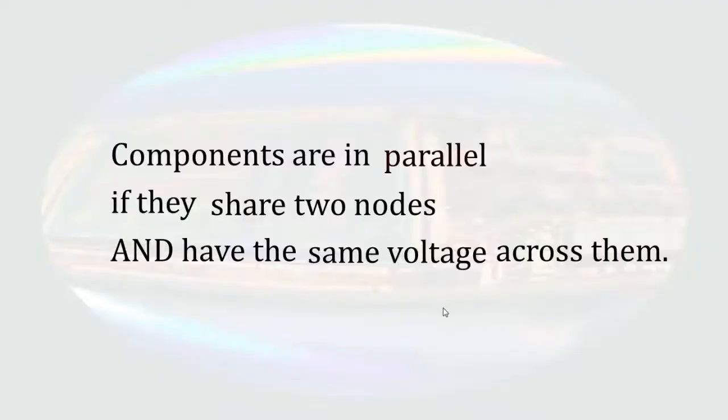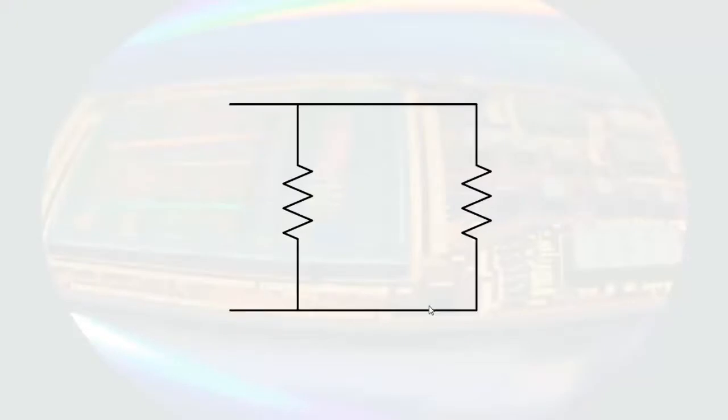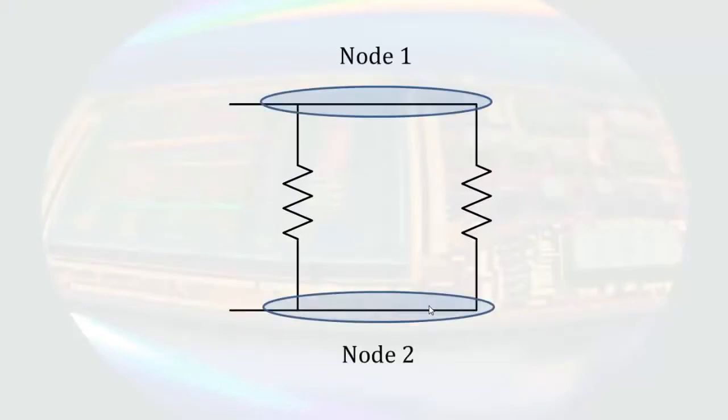Let's move on to parallel connections. Components are in parallel if they share two nodes and have the same voltage across them. This is a little redundant because a voltage is a difference in potential between two nodes — so if components share two nodes, they necessarily have the same voltage across them. If we take two resistors and connect them so that they share two nodes, each will have the same voltage across them, meaning these resistors are in parallel.